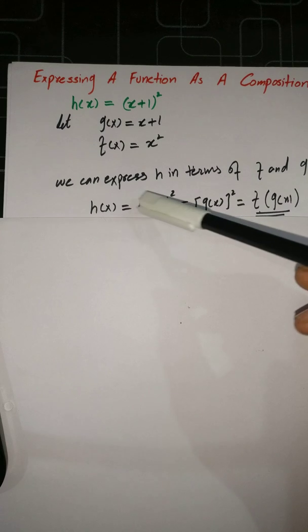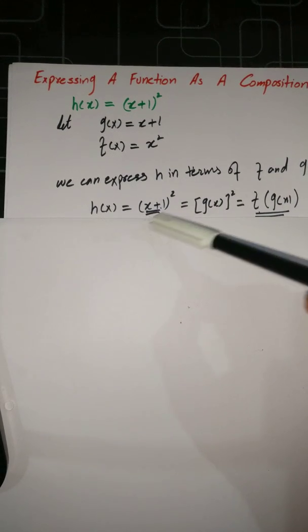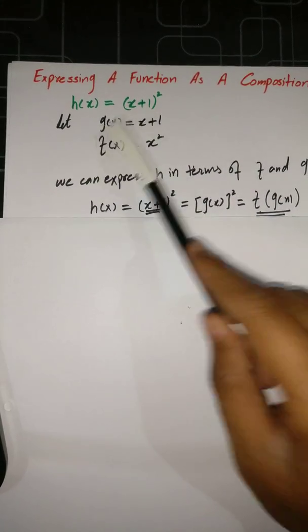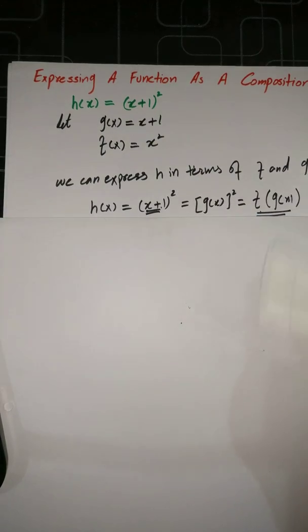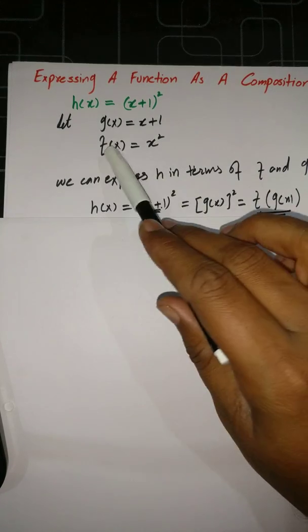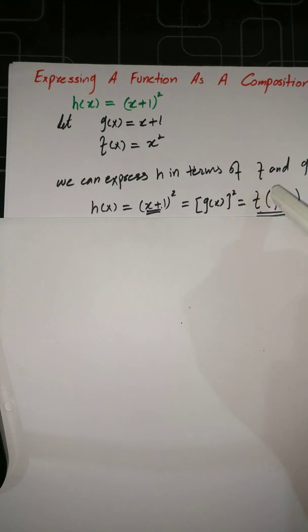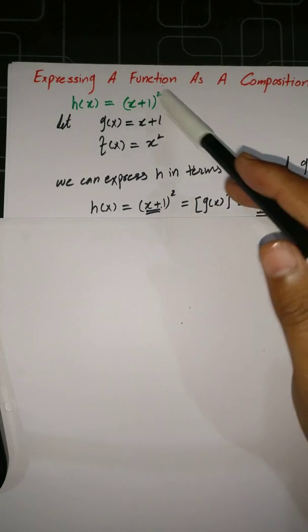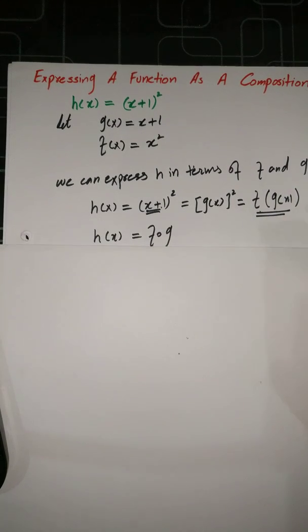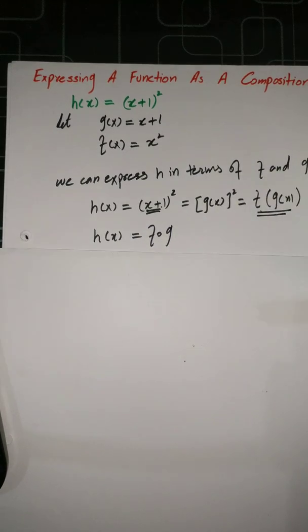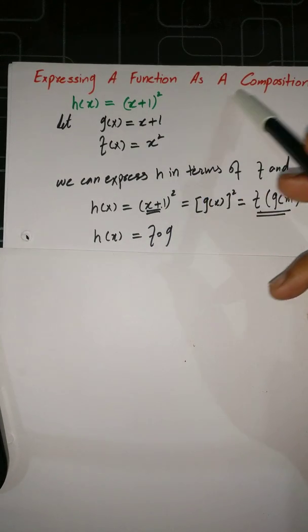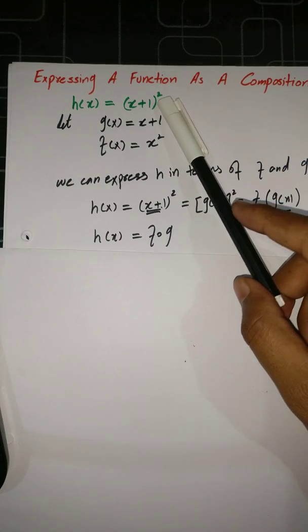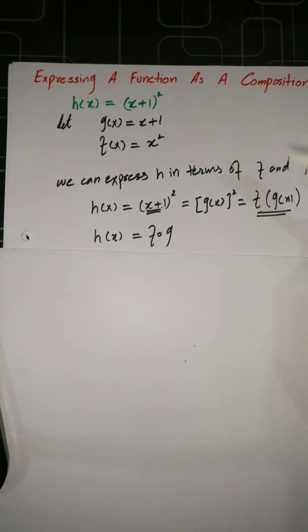We have h(x) = (x+1) squared. Since x+1 equals g(x), we just replace x+1 by g(x). At that point, g(x) has a whole square and f(x) is the squaring function. That's why we can write f(g(x)), because whenever we solve f(g(x)) it becomes h(x). We can also write h = f∘g. This is a way to decompose a function as a composition — we write our given function in composition form.